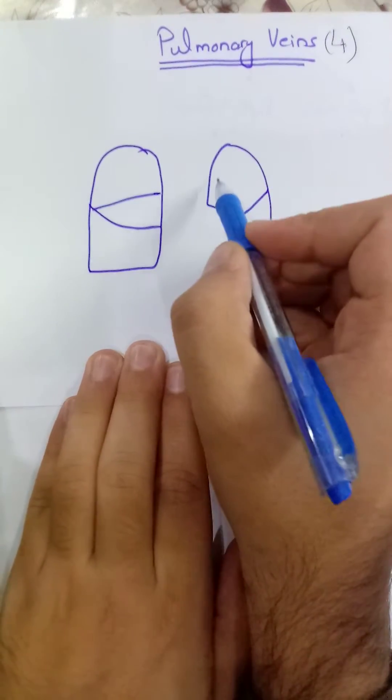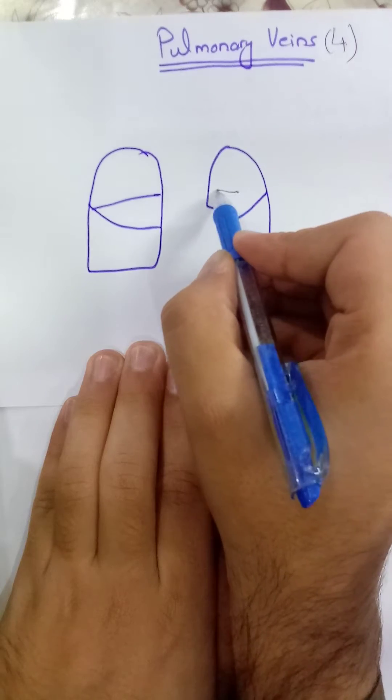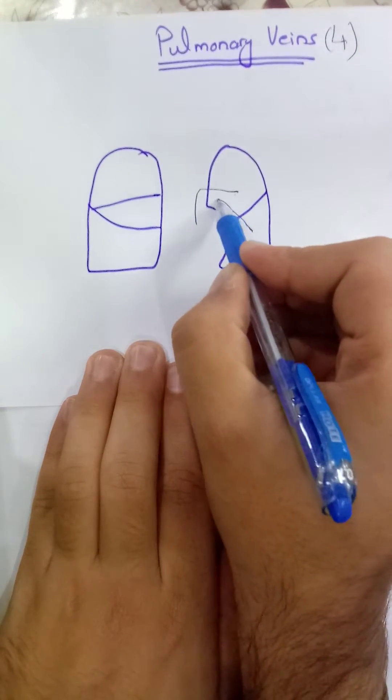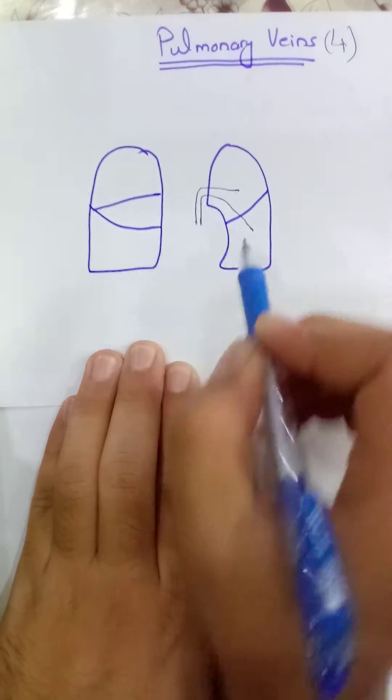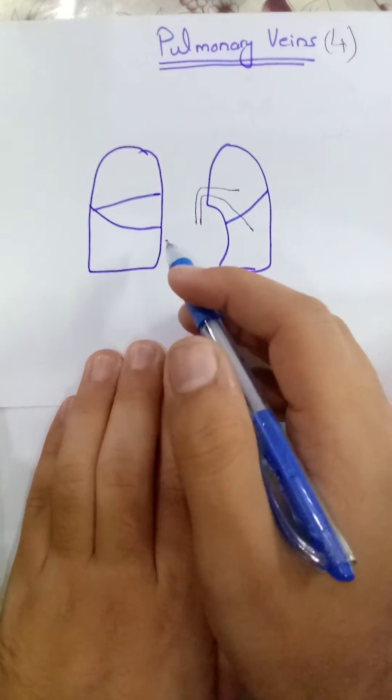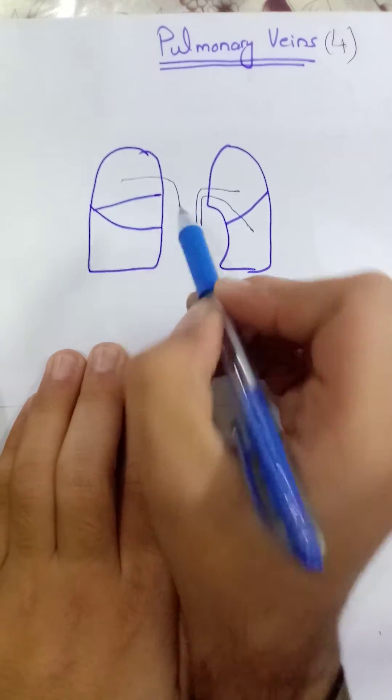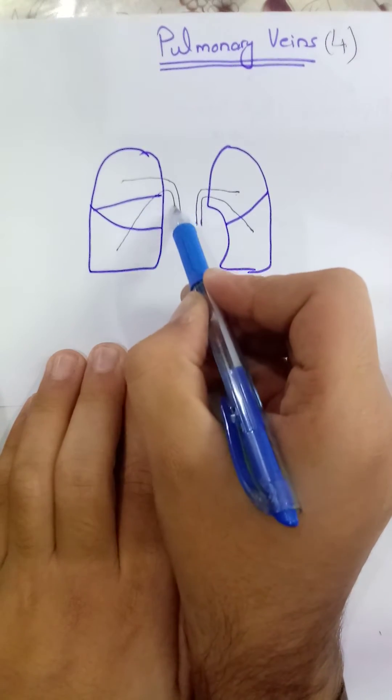From the left lung it is very simple. One vein will come from the superior lobe and one will come from the inferior lobe. These are two veins from the left lung, one from the superior lobe and one from the inferior lobe.